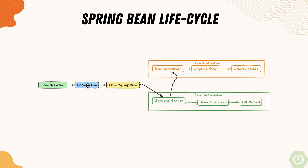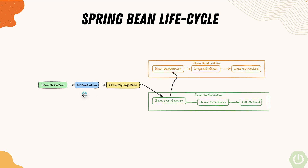Then there is the instantiation step, which is where Spring creates an instance of a bean. It calls the bean's constructors and creates an object. Think of this like a normal class where you create an object using the new keyword — that is exactly what is happening in this instantiation step.